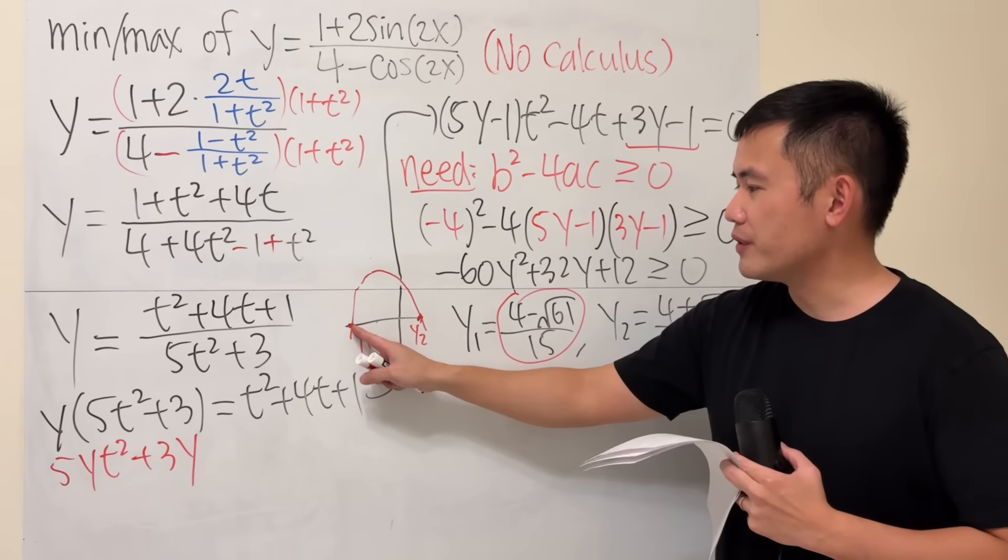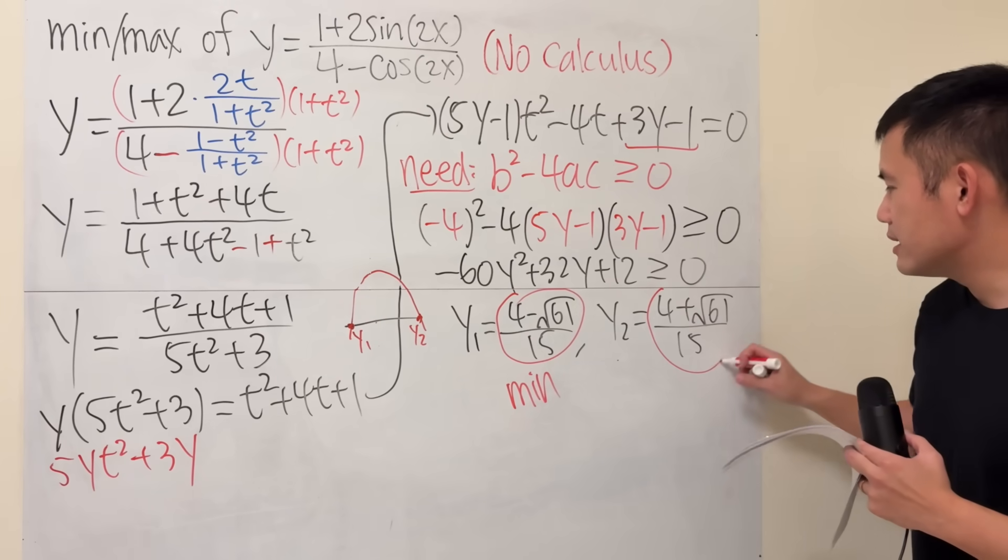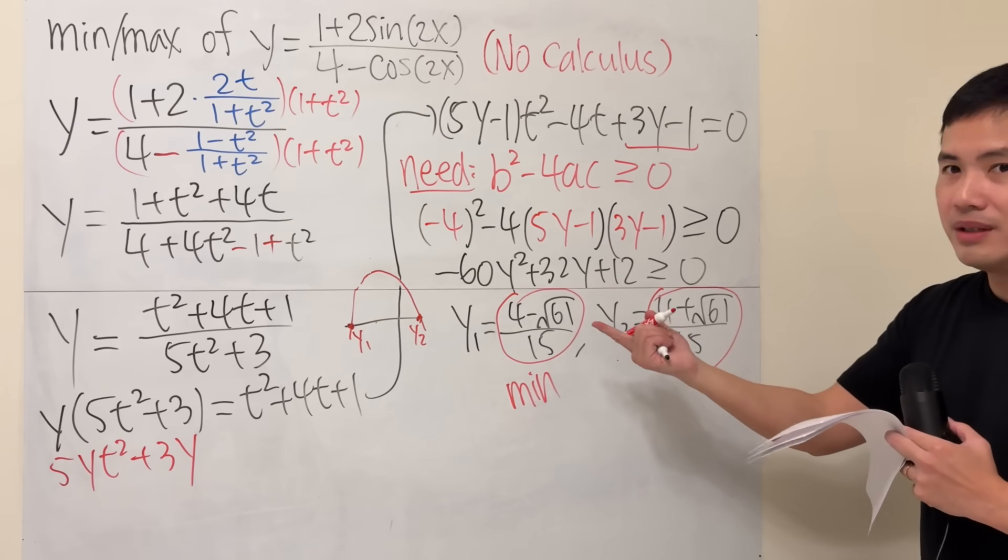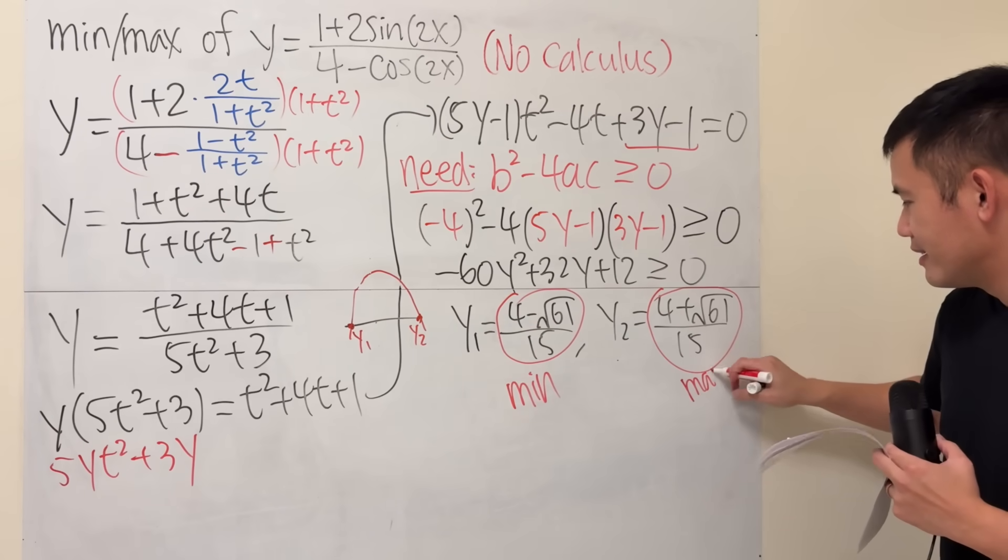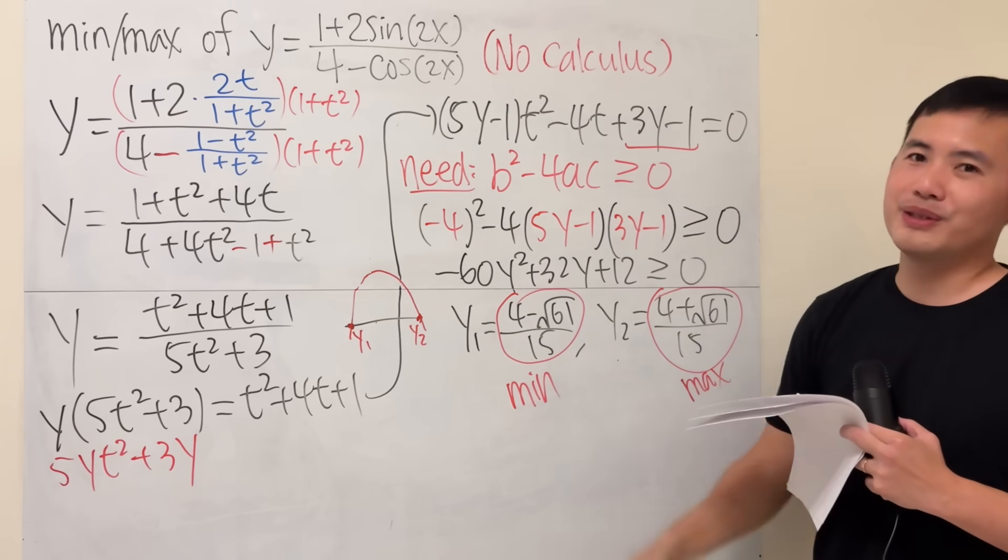Because in order for this to be true, y has to be in between of here and here. And that's precisely the y1. And then likewise, this is the bigger value, which will be the maximum. And there you have it. That's the answer for that question.